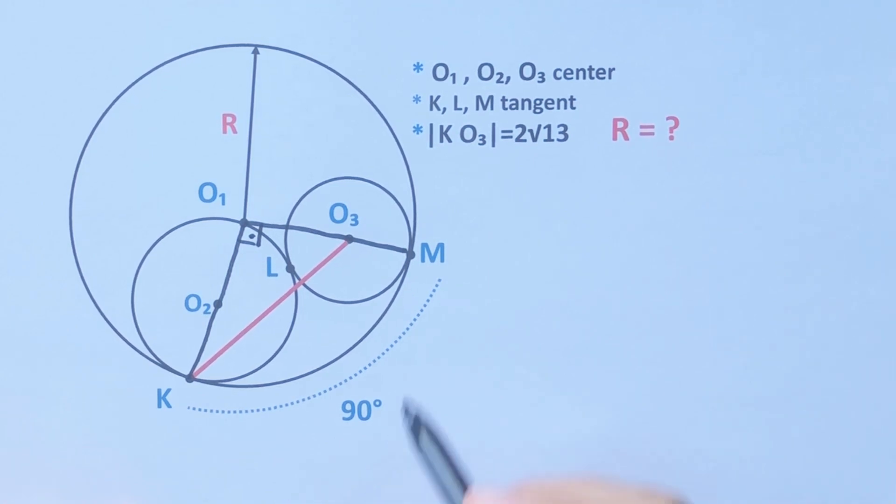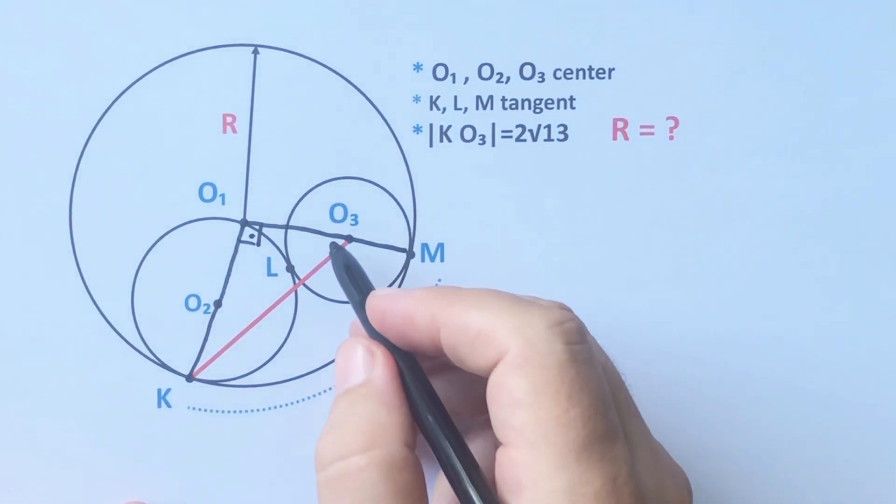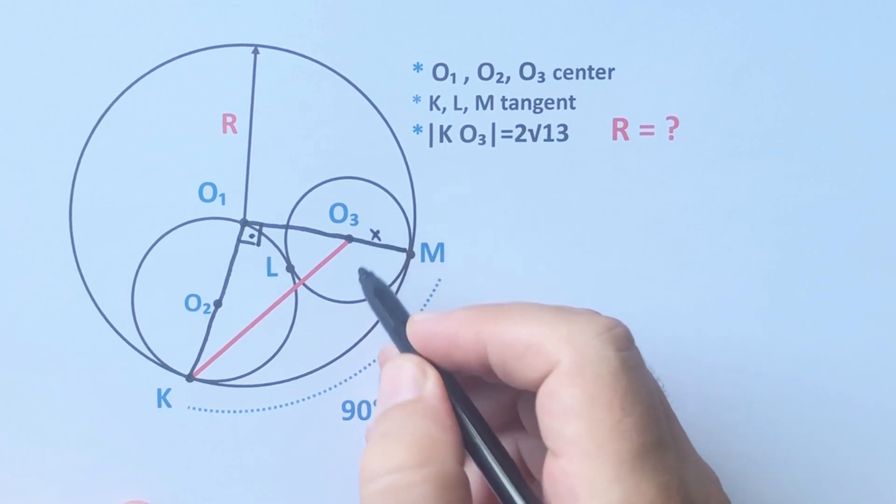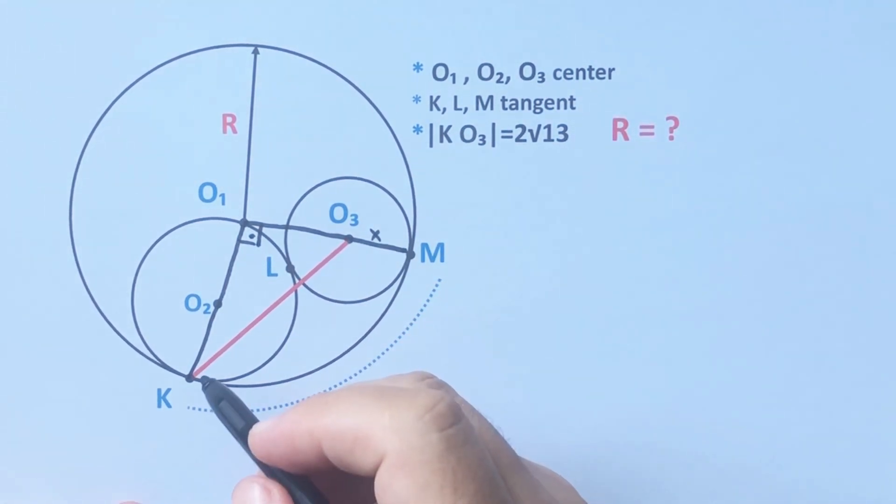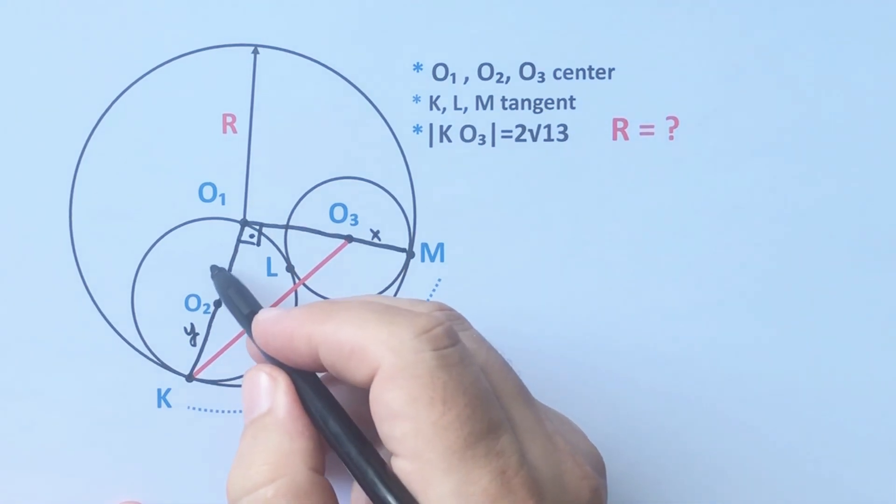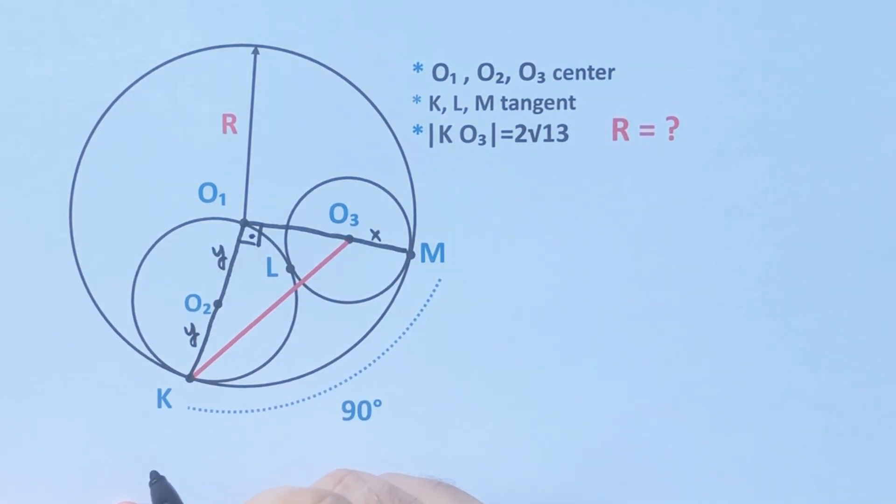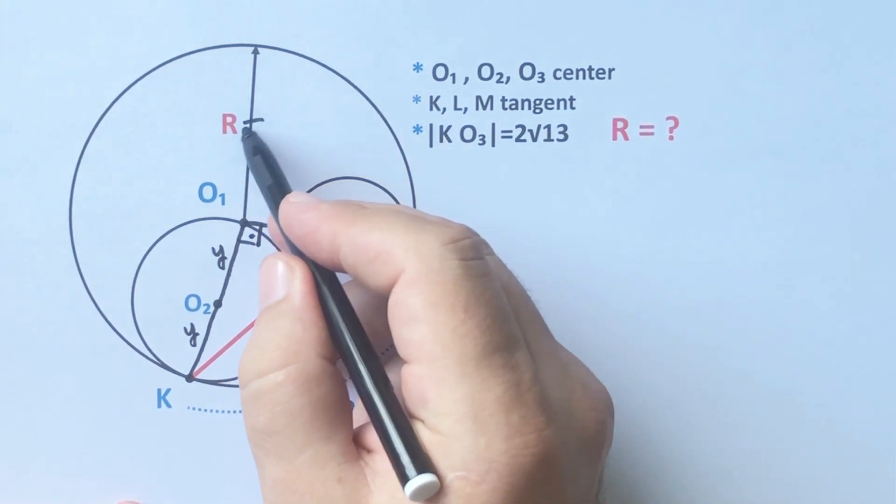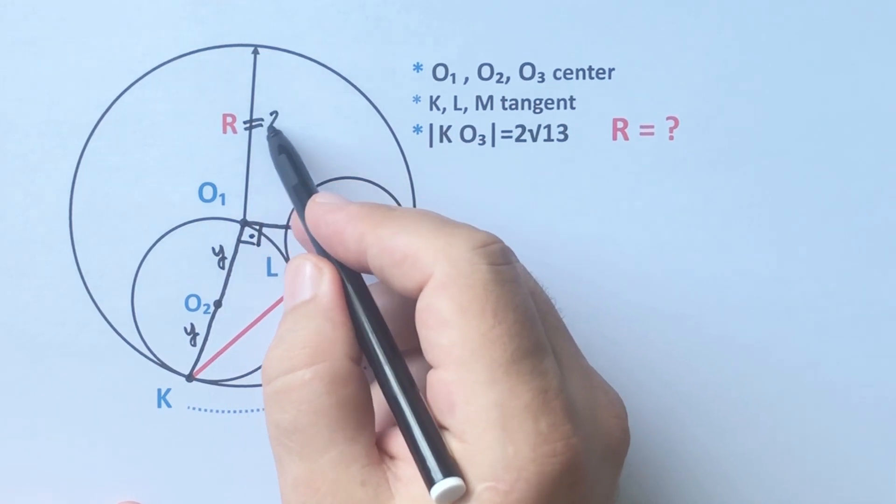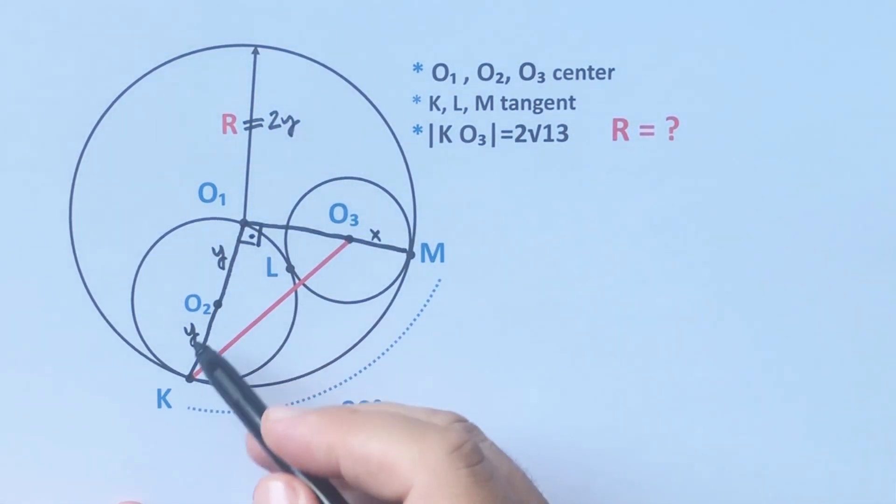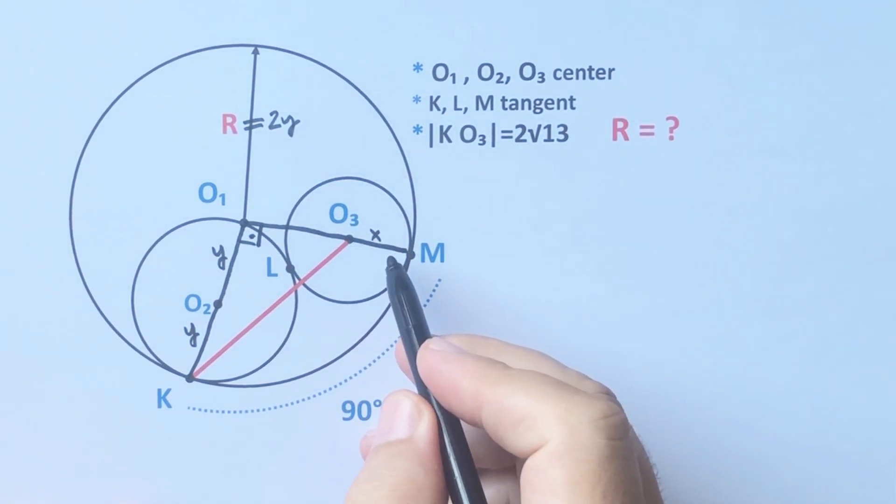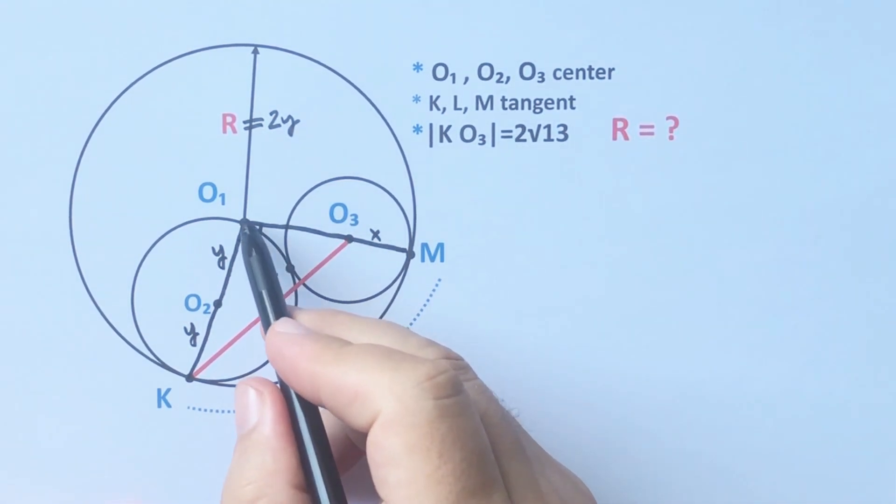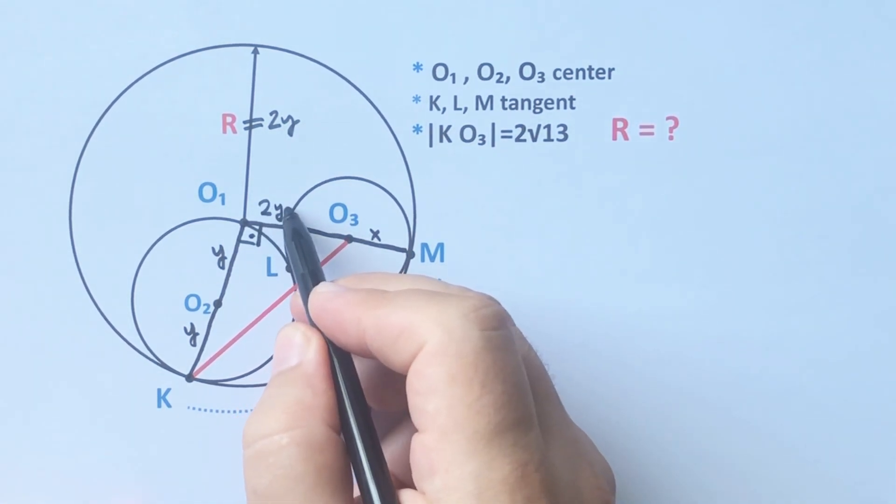Let's call here x units, and I'm going to call here y units. This length is also y, and that means the radius of the big circle equals 2y. So if it is x, this length must be 2y minus x.